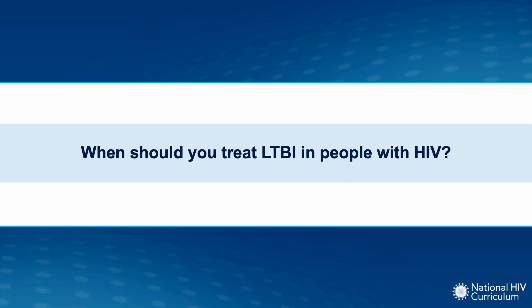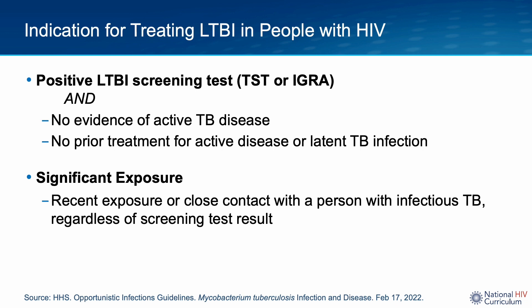Now let's talk about when we need to start LTBI treatment in people with HIV. An important point is that both the TST and IGRA do not distinguish between active and latent TB infection. A negative LTBI result does not rule out active tuberculosis, and any patient with a positive TST or IGRA must first be ruled out for active TB prior to initiating LTBI treatment. LTBI treatment is indicated if a patient has a positive screening test with no evidence of active TB and no prior treatment for active or latent TB. Treatment is also indicated if an individual has had a significant exposure to an active TB case, regardless of their screening test result.